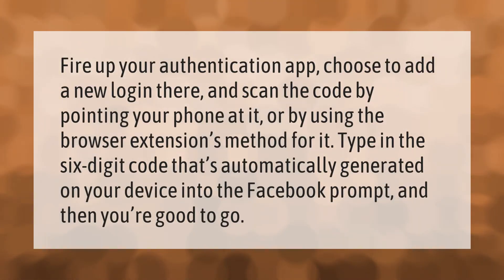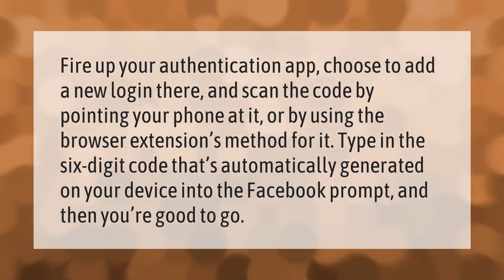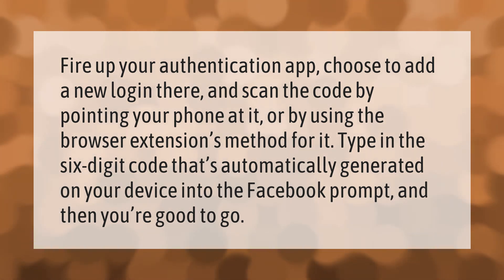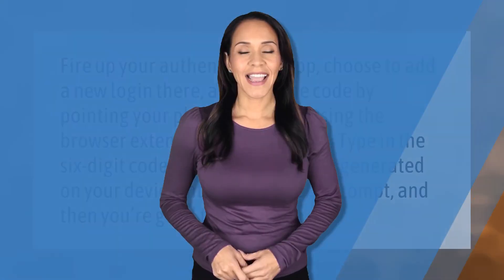Fire up your authentication app, choose to add a new login, and scan the code by pointing your phone at it or by using the browser extension method. Type in the six-digit code that's automatically generated on your device into the Facebook prompt and then you're good to go. Thank you for watching — please subscribe and hit the bell notification.